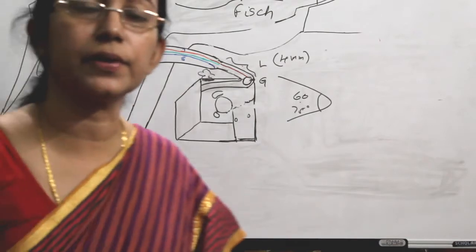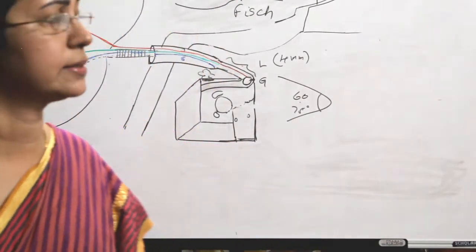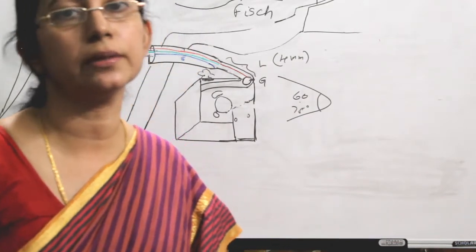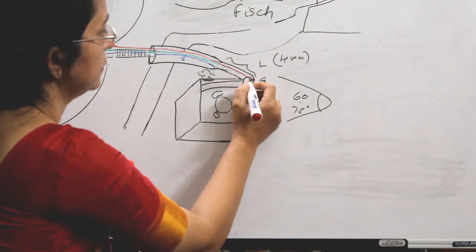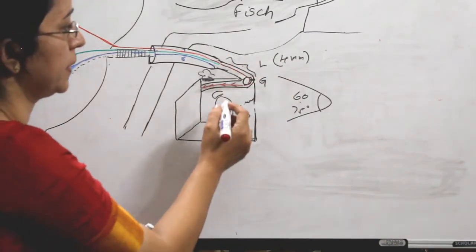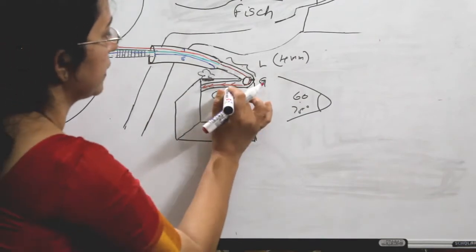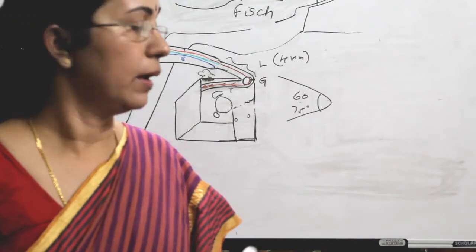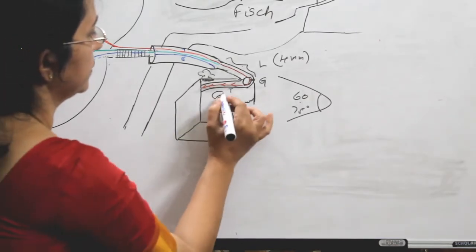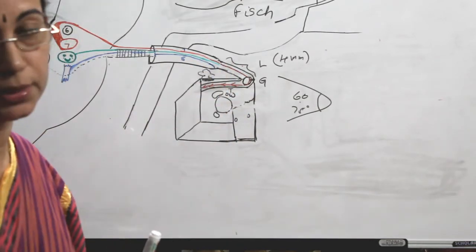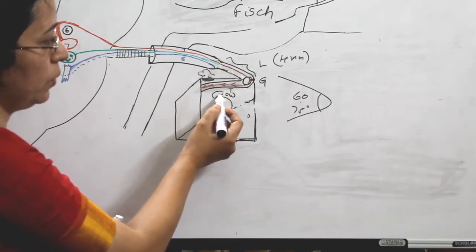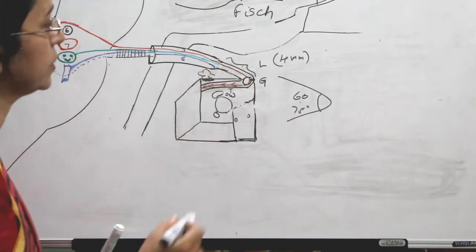Will the facial nerve proper relay in the ganglion? Never — it is the motor route, there is no relay. It curves around the geniculate ganglion and goes posteriorly. This is the labyrinthine segment, and the next part is called the tympanic segment, which passes horizontally backwards in the medial wall of the middle ear. It passes between the oval window below and the bulge of the lateral semicircular canal above. That is the tympanic segment.